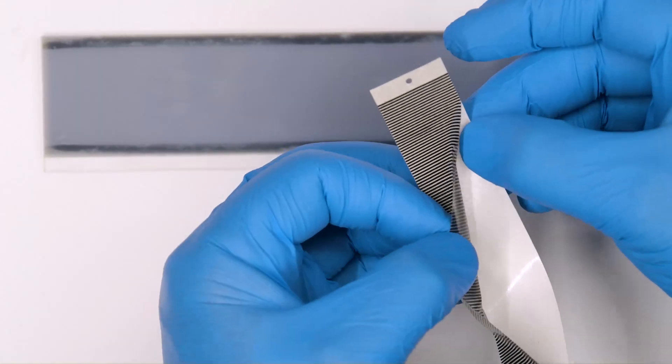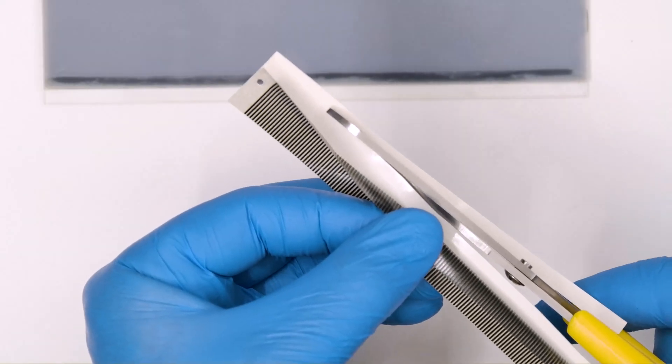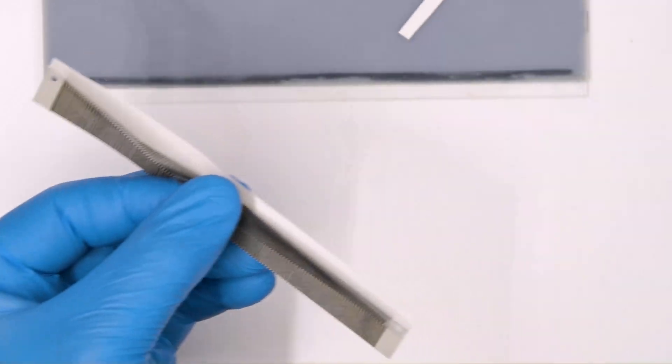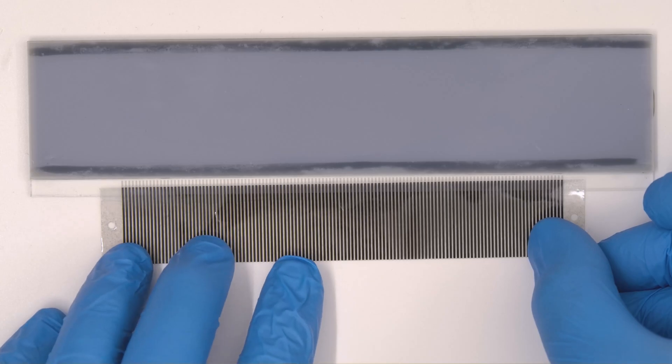Peel and cut off a portion of the rear film of the flat. Place the flat on the display, making sure the contacts are perfectly matching.